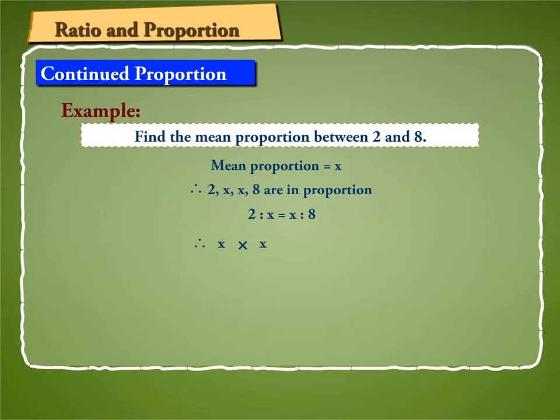Therefore, x times x is equal to 2 times 8. Or, x squared is equal to 16. We know that 4 times 4 is equal to 4 squared. Therefore, x is equal to 4. Hence, mean proportion between 2 and 8 is 4.